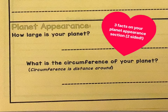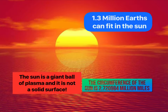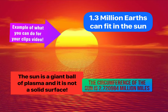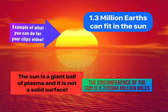Next, you're going to include three facts on your planet appearance section. Remember, this is two-sided and it even goes on to a third page, so there are lots of facts you can choose from. You can find a picture of your planet on the internet and make that the background of your slides, then include three of your facts. For example: 1.3 million Earths can fit into the sun; the circumference of the sun is 2.7 to 984 million miles; and the sun is a giant ball of plasma and does not have a solid surface.